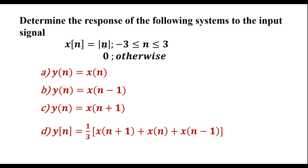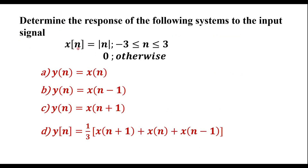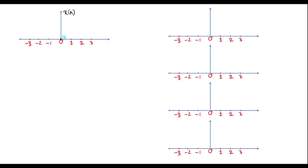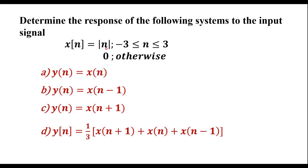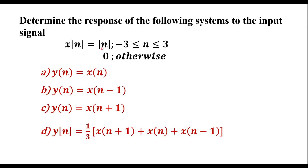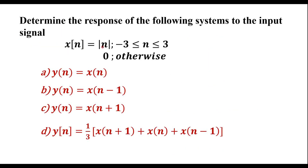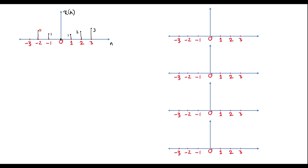x[n] = |n| for n varying from minus 3 to plus 3. At n=0, its value is 0. At n=1, its value is 1. At n=2, it is 2. At n=3, it is 3. At n=-1, |−1| = 1, so its value is 1. At n=-2, |−2| = 2, and at n=-3, it is 3. This is the representation of the given x[n] signal.